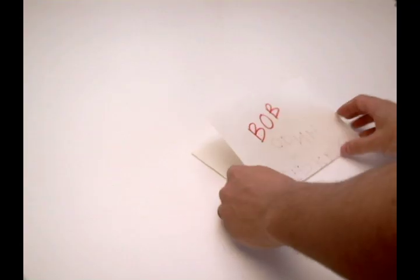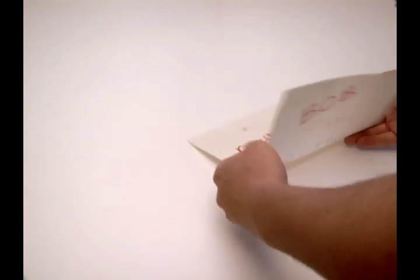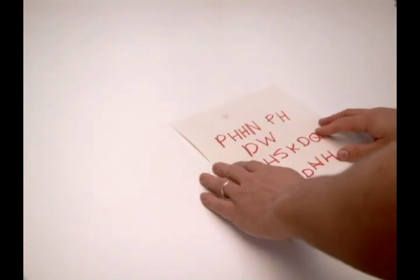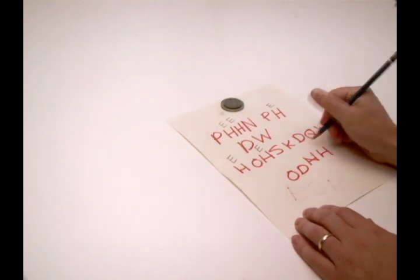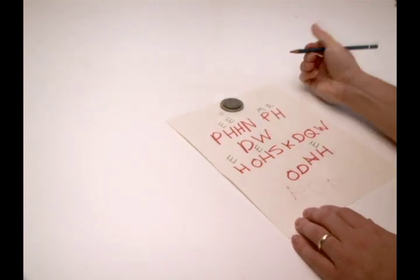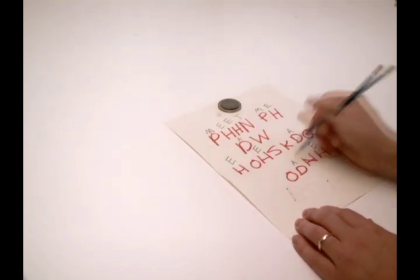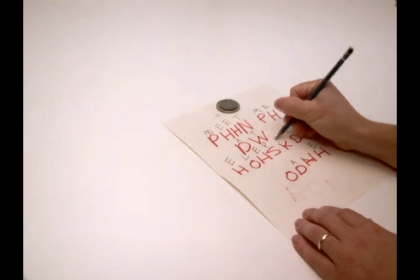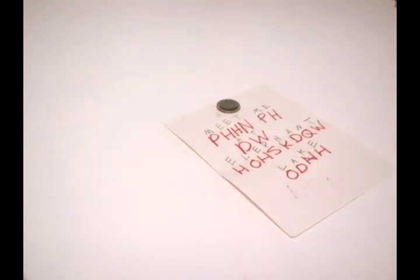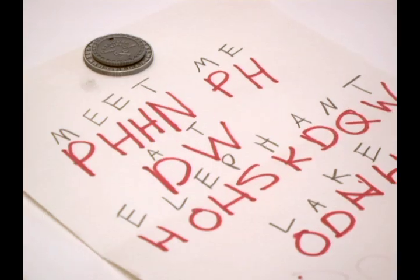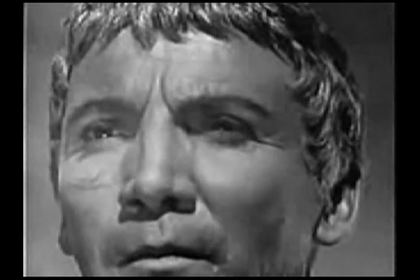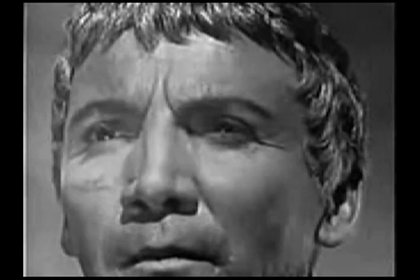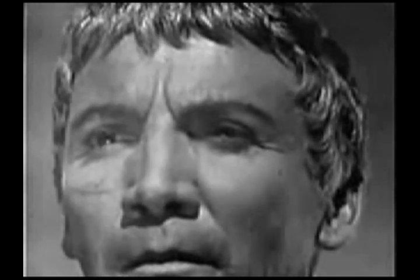Then Bob simply subtracts the shift of three from each letter in order to read the original message. Incredibly, this basic cipher was used by military leaders for hundreds of years after Caesar.